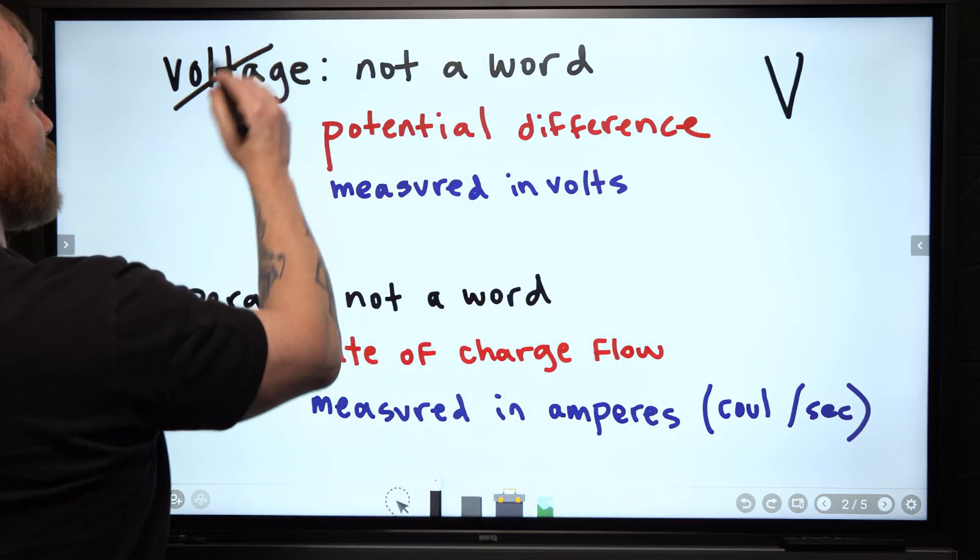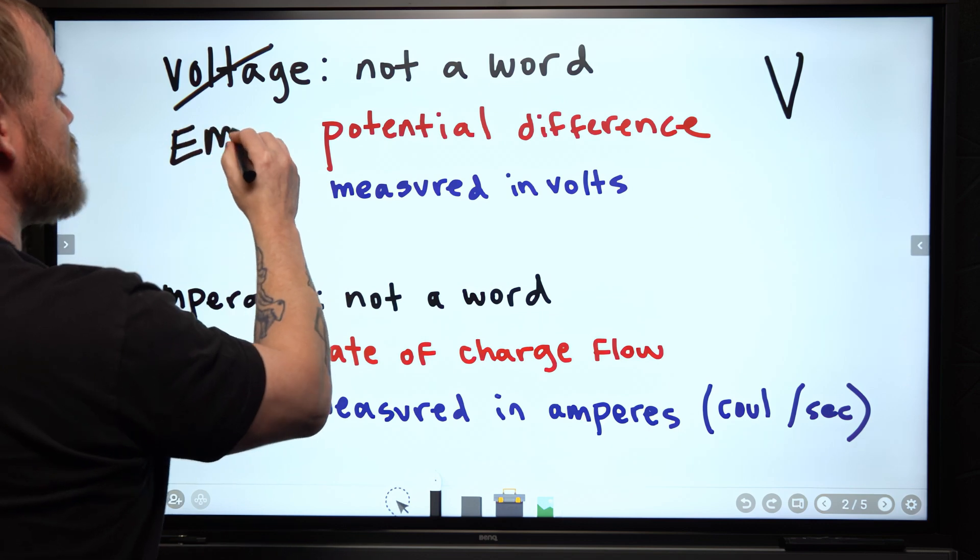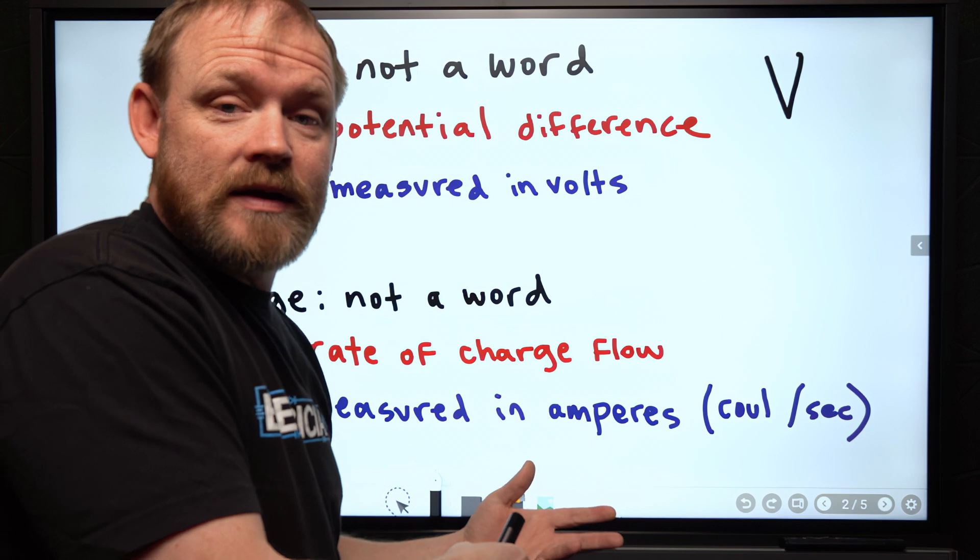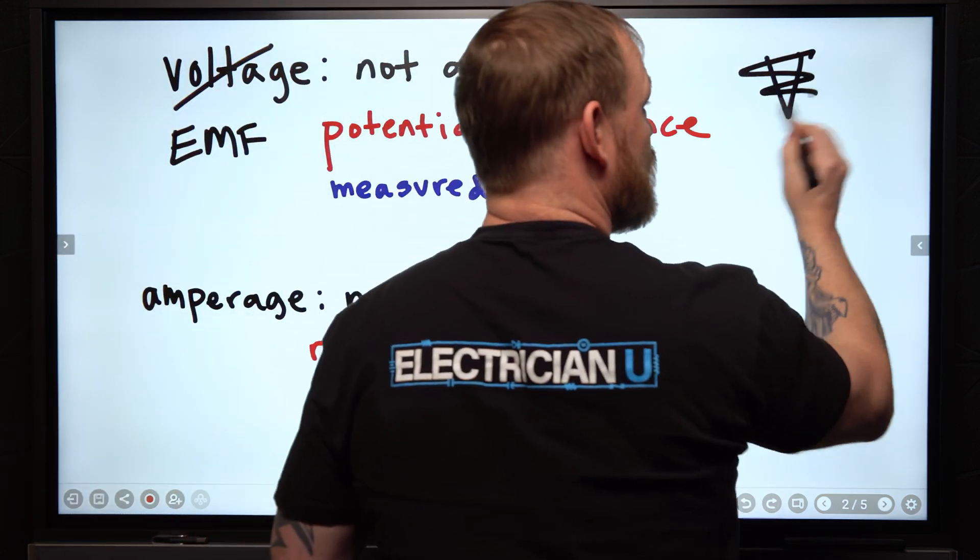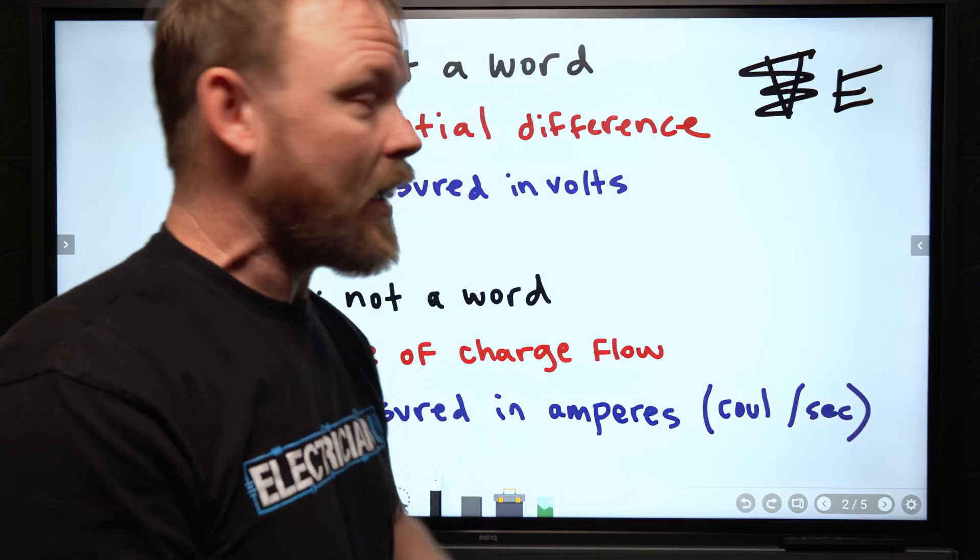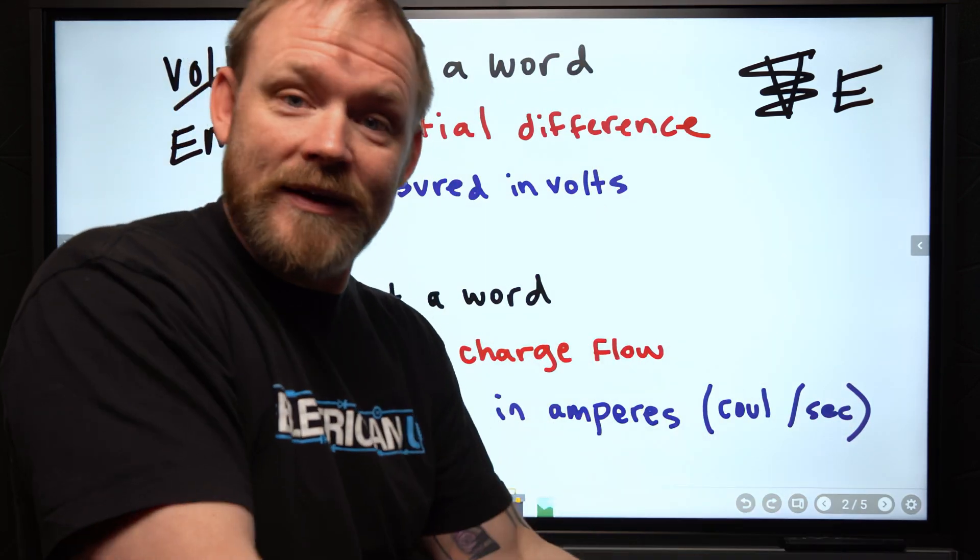Or we can even say we're measuring EMF. We're measuring an electromotive force. And how much force there is, is measured in volts. Which is why we say we're measuring EMF. We're not measuring volts. You can't measure volts. Volts is the measurement itself.